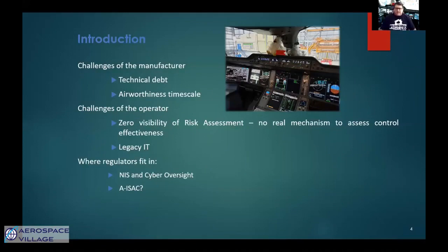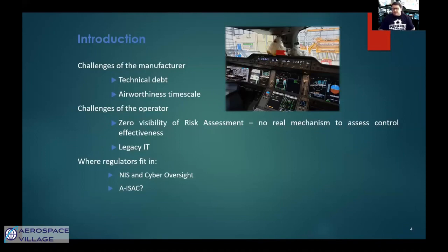Going back to the gap in the risk assessment — could the regulator help bridge that gap? The issue with sharing risk assessments with operators is that they are highly sensitive. Maybe some trusted government bodies could be given more details on the risks and help guide operators on the effectiveness of their controls without passing on sensitive detail. If we can't trust the government, what about the aviation ISAC? Although it's a member organization, most large operators and manufacturers are members. Could this be another suitable mechanism? Whatever happens, I feel something does need to be done.